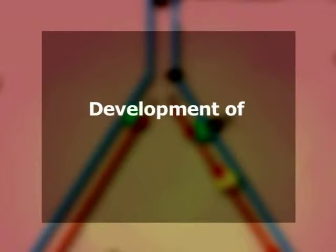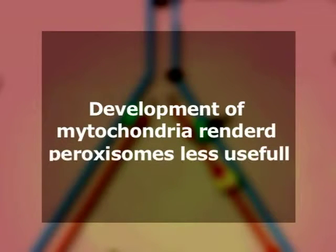Since the peroxisome resembles mitochondrion in utilizing oxygen, it was earlier believed to be a vestige of an ancient organelle which carried out oxygen metabolism in primitive cells having no mitochondria. It was also assumed that the development of mitochondria rendered peroxisomes less useful since their functions were taken over by mitochondria. However, peroxisomes are now known to perform a variety of functions.